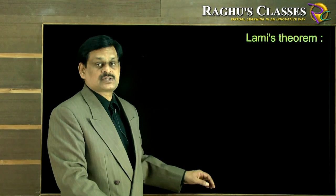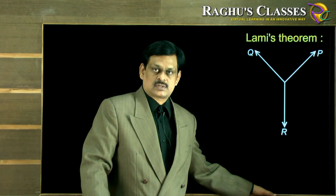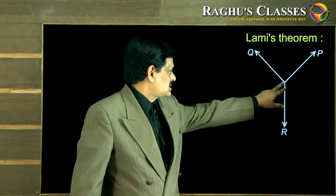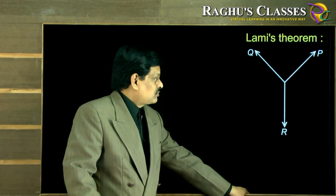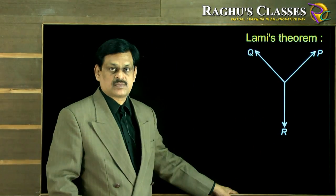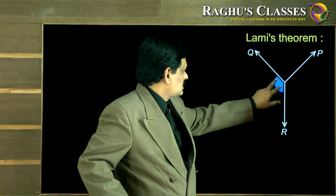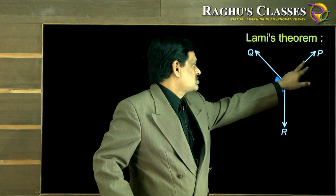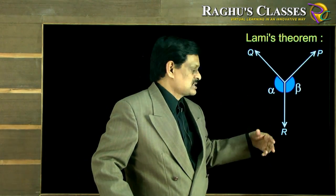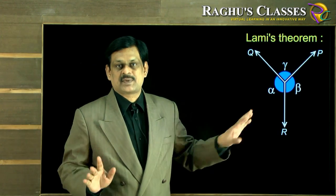Let us see what Lami's theorem is. Consider three coplanar concurrent forces P, Q, R meeting at a point O, keeping that point in equilibrium — meaning the resultant of the system is zero. The angle between Q and R (opposite to P) is alpha, the angle opposite to Q is beta, and the angle opposite to R is gamma.